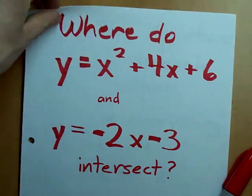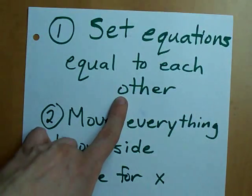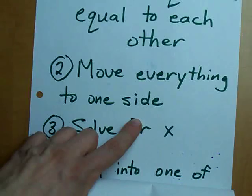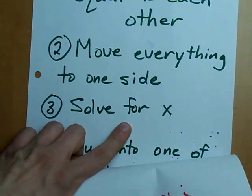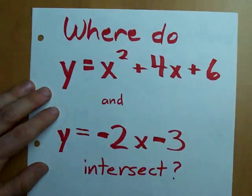Remember the formula, the way to do it? Four-step process. Number 1, set the equations equal to each other. Number 2, move everything to one side. Number 3, solve for x. Number 4, plug those values into the original equation.